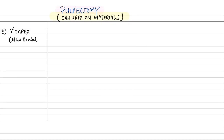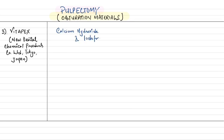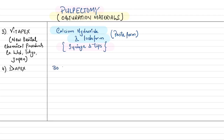The third material is Vitapex from New Dental Chemical Products, Tokyo, Japan — a calcium hydroxide and iodoform paste delivered via syringe and tips. The fourth material is Diapex, containing 30% calcium hydroxide, 40.4% iodoform, and 22.4% silicon oil.